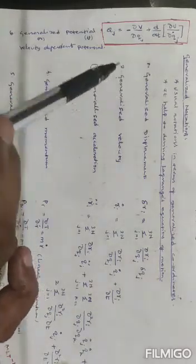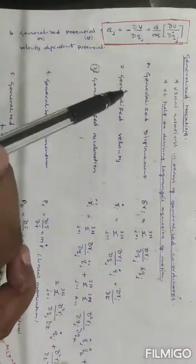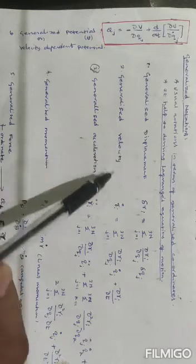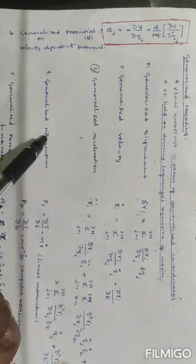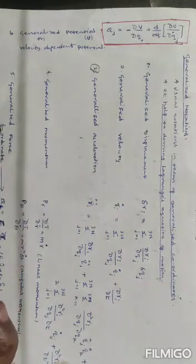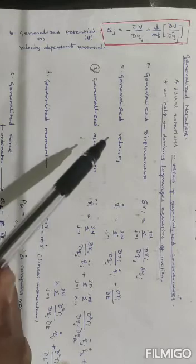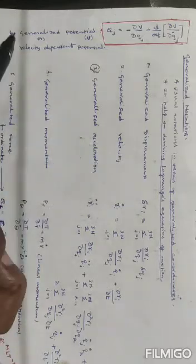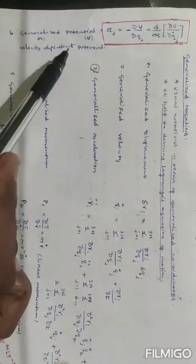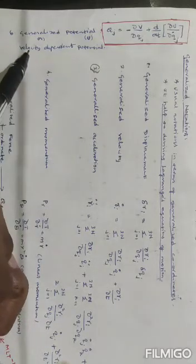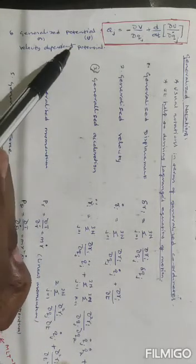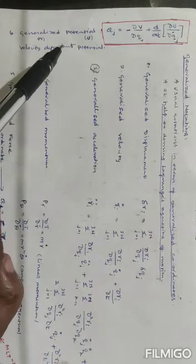Friends, now we have generalized displacement, velocity, acceleration, momentum, and generalized forcing. The last important thing is generalized potential, or velocity-dependent potential.